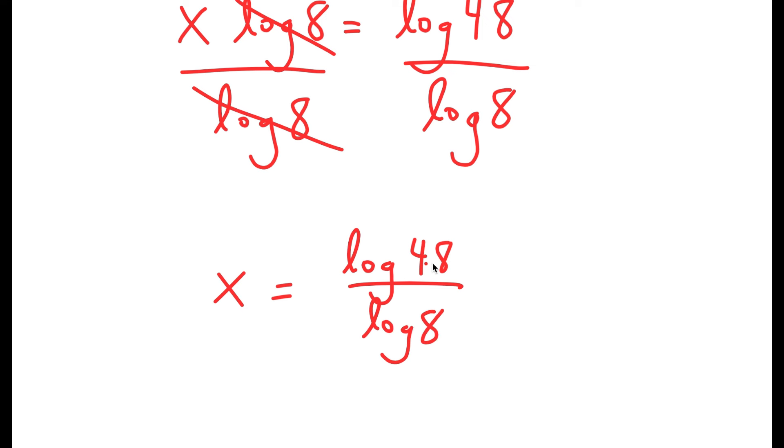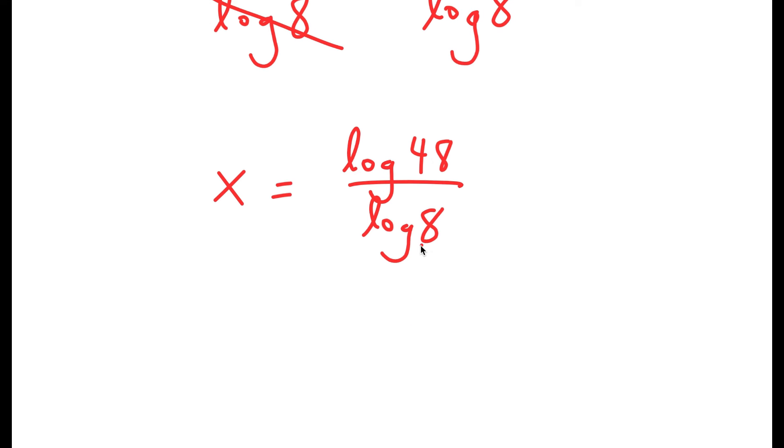So now I get x is equal to log 48 over log 8. Now, although this is a solution of x, I want to find the exact value of x, so I need to find the decimal value of x. So to do that, let's first simplify this. Log 48, I'm going to rewrite this as log of 8 times 6.